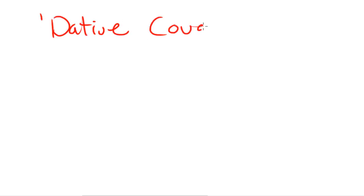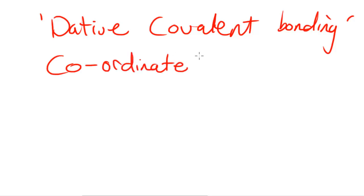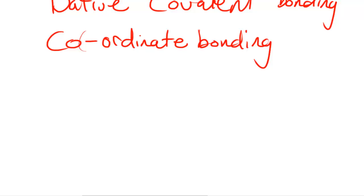In this video I'm going to be taking a look at dative covalent bonding. Dative covalent bonding is also sometimes called coordinate bonding — they're both the same thing. What this basically is, is a bond which is formed when a lone pair of electrons has been donated, where both electrons in the covalent bond formed are donated by one of the species taking part — so one of the atoms in that bond donates both electrons.